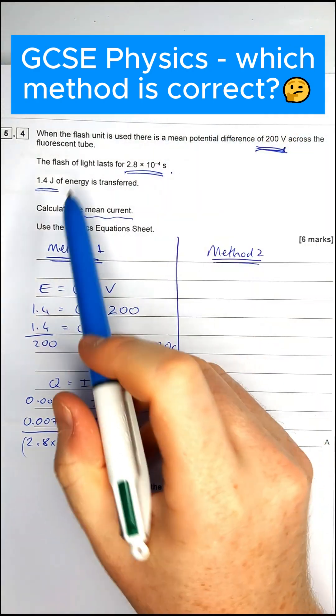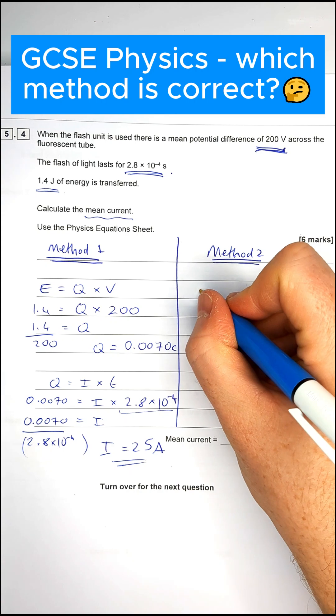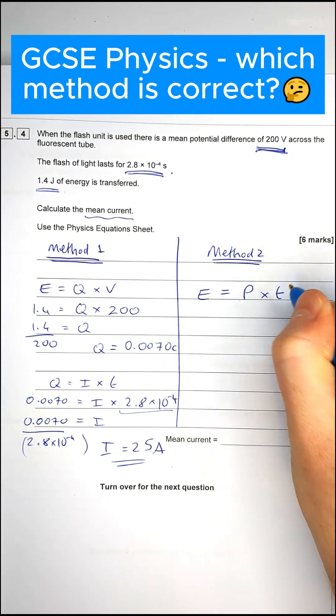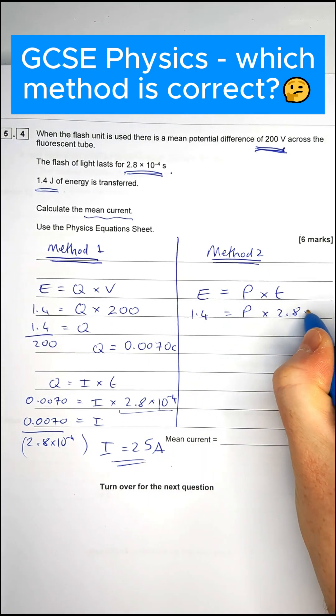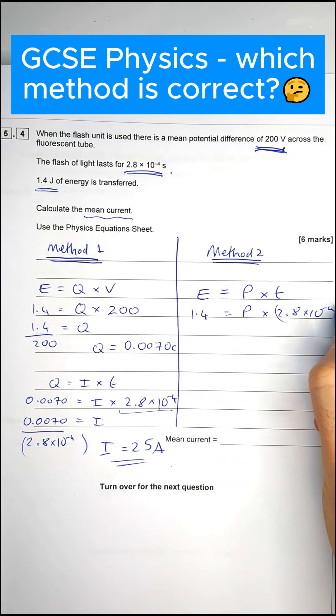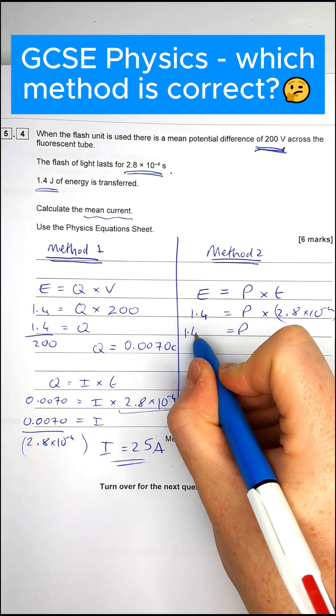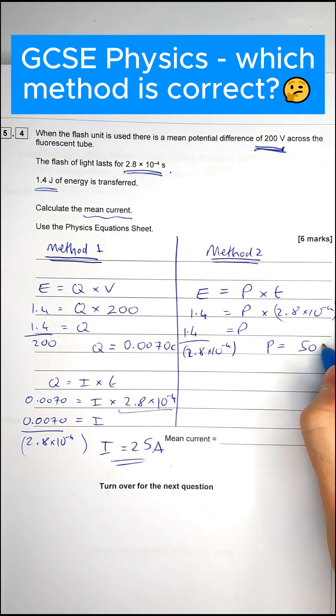Now, you might be able to notice we've got energy and we've got given to us time. So using that, we can actually work out power. So I can also use energy equals power times time. Energy is 1.4. Power, we don't know. Time is 2.8 times 10 to the minus 4. And therefore, power is going to equal 1.4 divided by time. And that gives us a power of 5,000 watts.